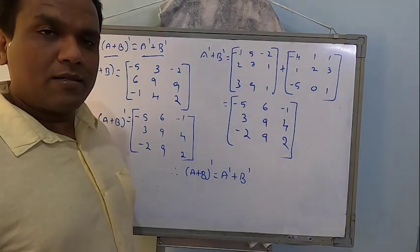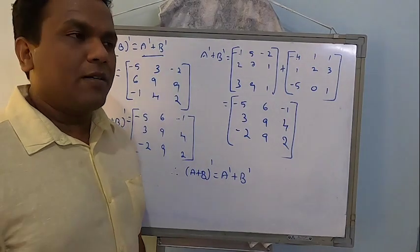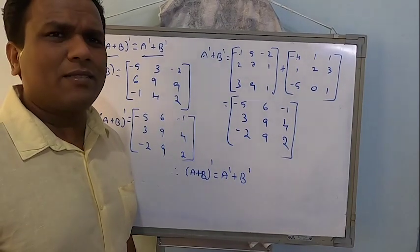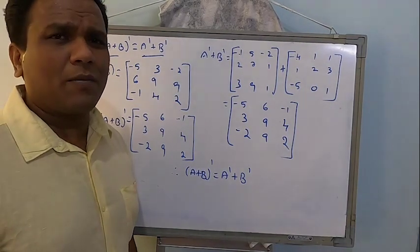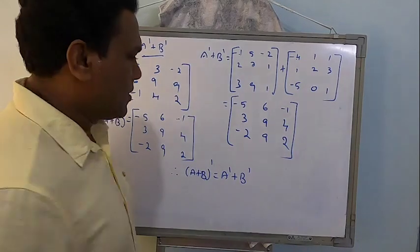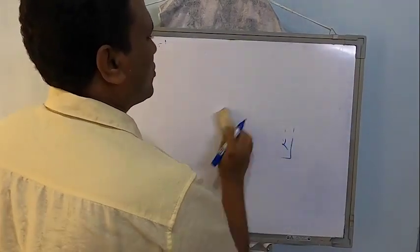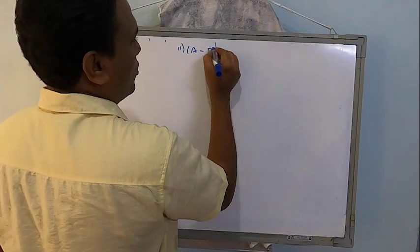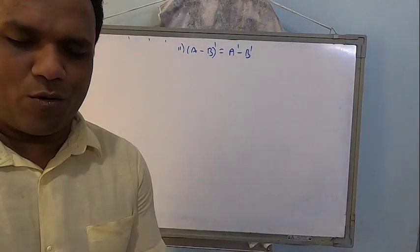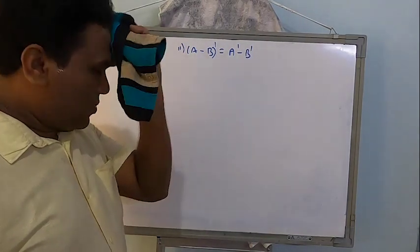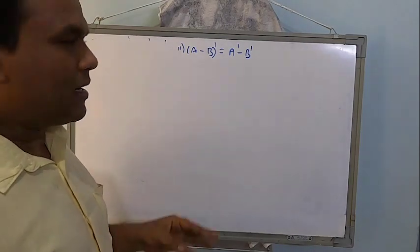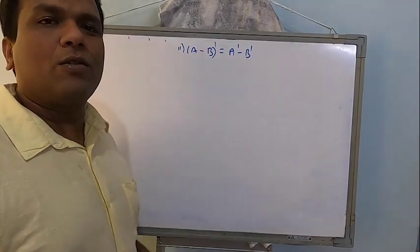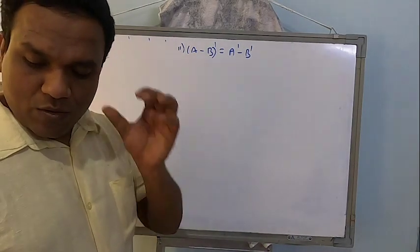This is a simple topic — the chapter itself is one of the easiest. For the second sub-part, verify (A-B)' = A'-B': find A-B and its transpose, then find A' and B' and subtract. Check LHS equals RHS. That's all you need to do.